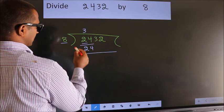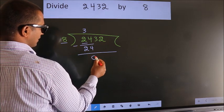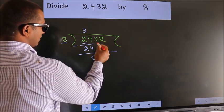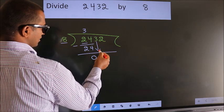Now, we should subtract. We get 0. After this, bring down the beside number. So, 3 down.